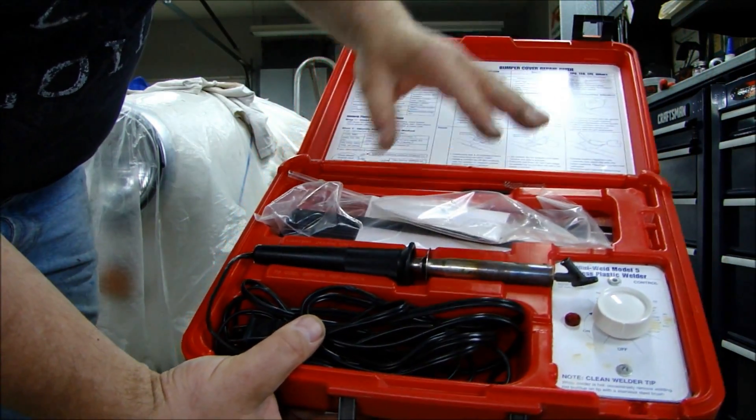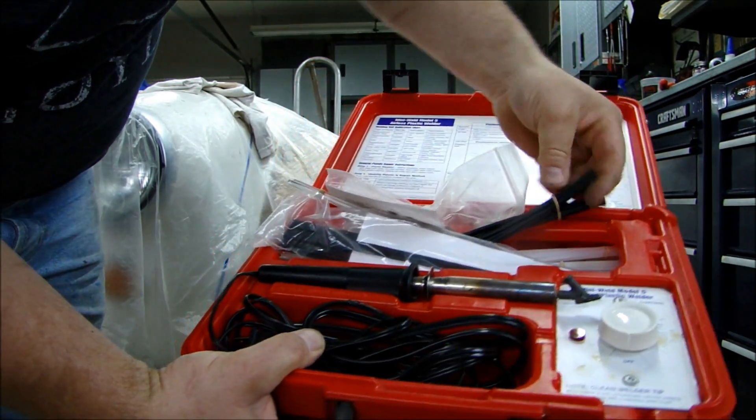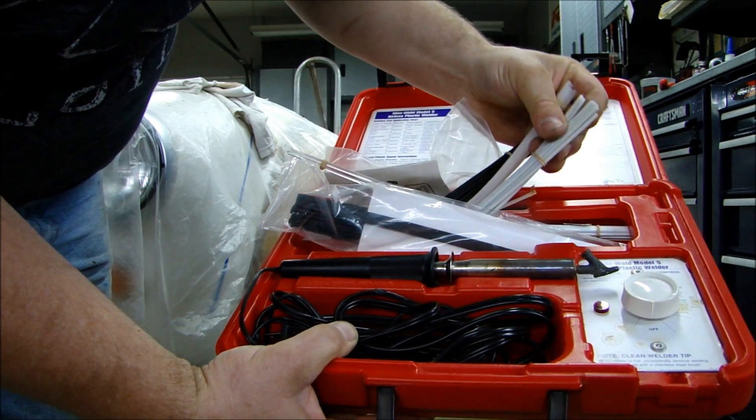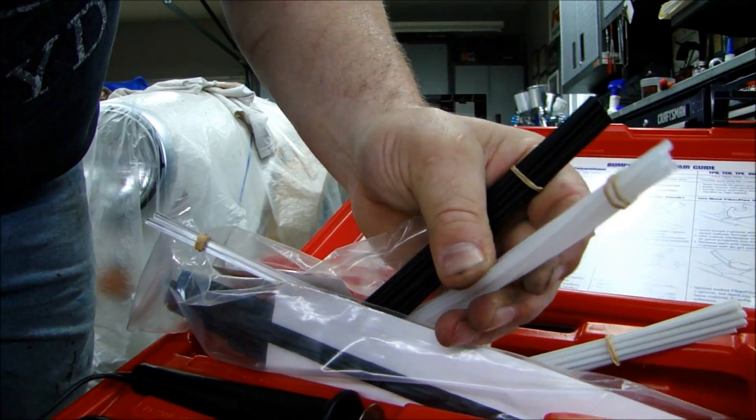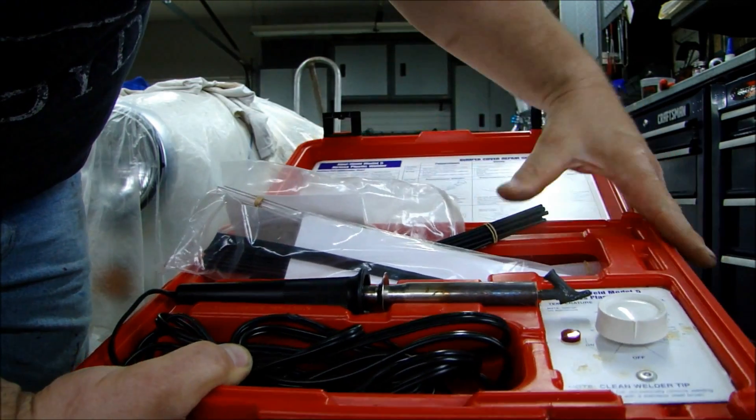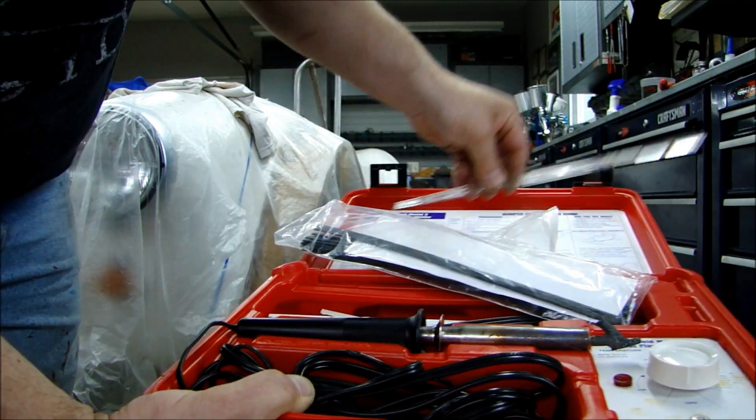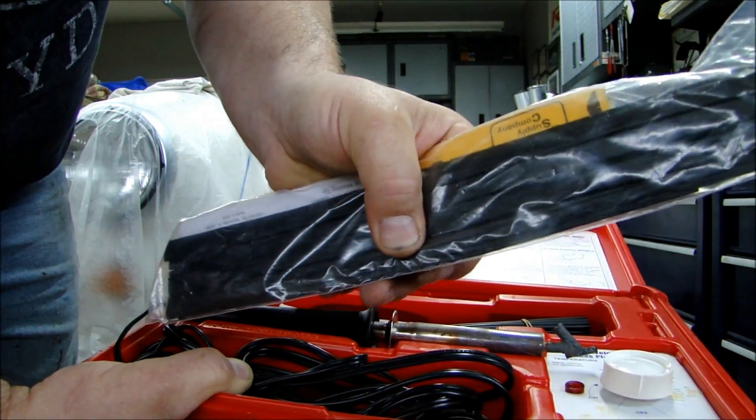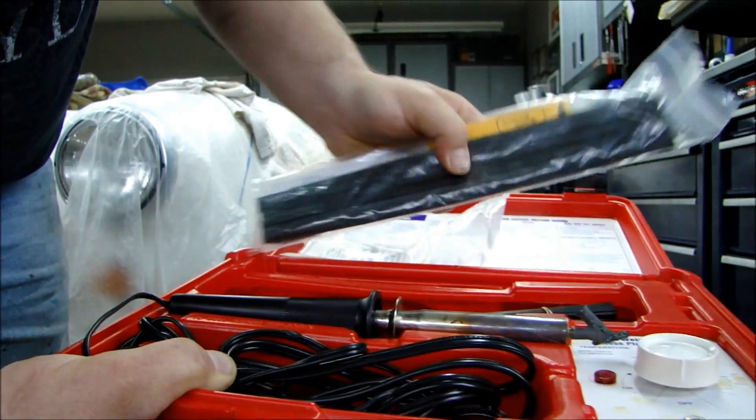You get a bunch of material, filler materials, which are just like welding rods. Different colors, different shapes, different types for different types of plastics. Clear milky ones, hard plastic ones, all different kinds of welding rod. You can see that there are different colors, different shapes, different hardnesses depending on the plastic you're going to be welding. This is something I'm going to be using, it's really cool. Here's some clear vinyl, which is really neat.